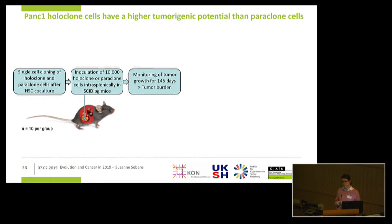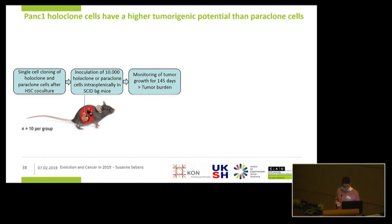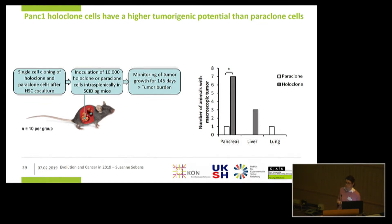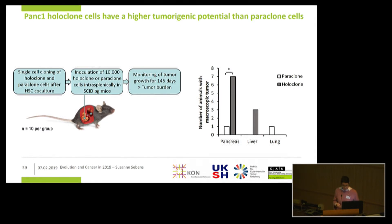We wanted to confirm whether these cells indeed have tumorigenic potential. We performed single cell cloning of holoclone and paraclone cells enriched after HSC co-culture, and after expansion, inoculated 10,000 cells of either clone intrasplenically into SCID-beige mice, monitoring tumor growth over approximately five months. Inoculation of paraclone cells — containing a low number of stem cells — led to tumor formation in only 1 of 10 animals, while inoculation of holoclone cells led to tumor formation in 7 of 10 animals. We therefore conclude that cells enriched under HSC co-culture exhibit stem cell properties and are tumorigenic.